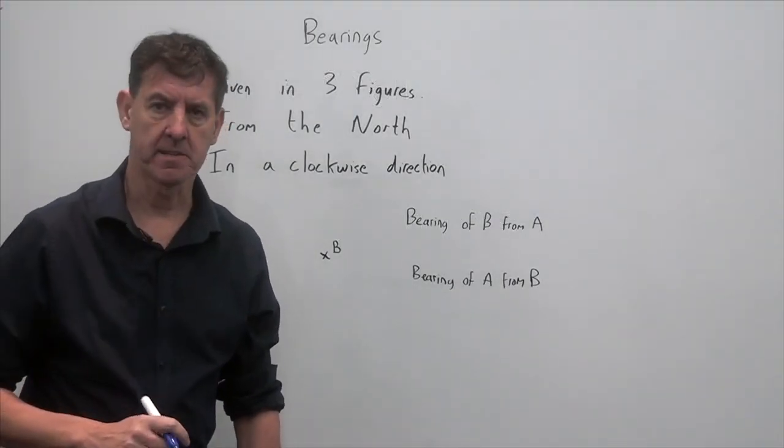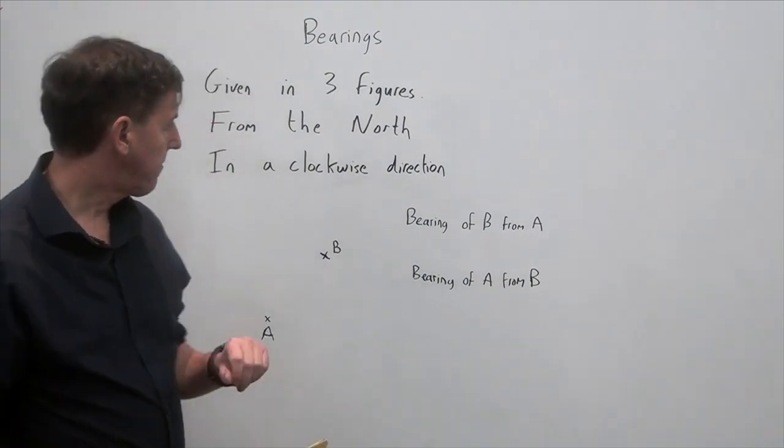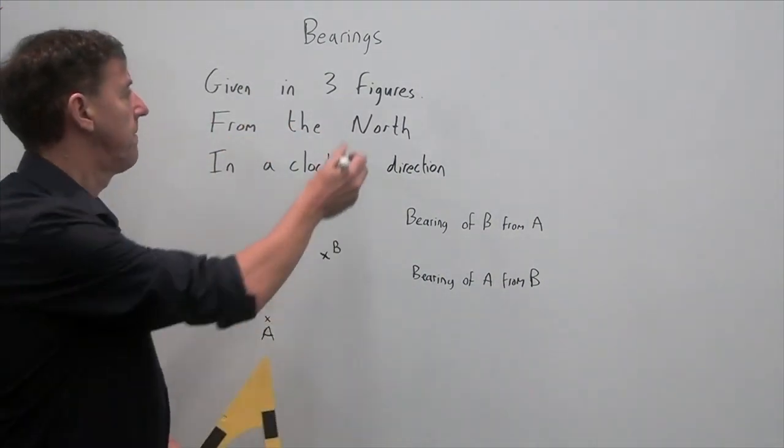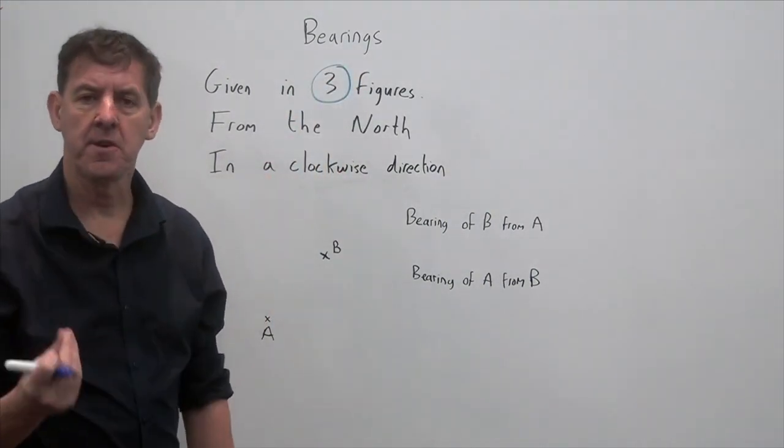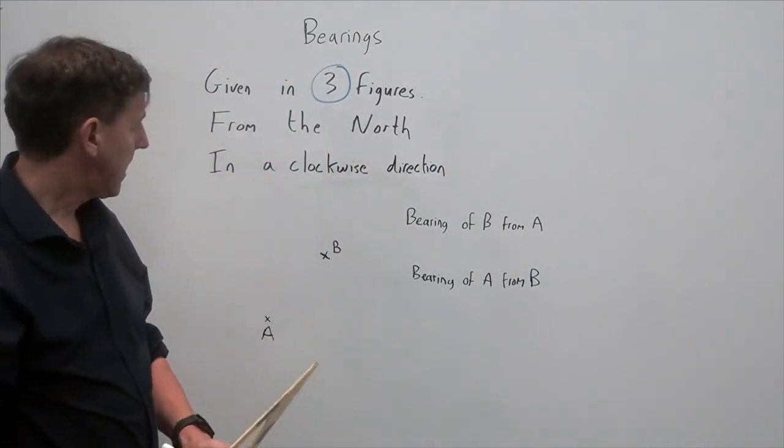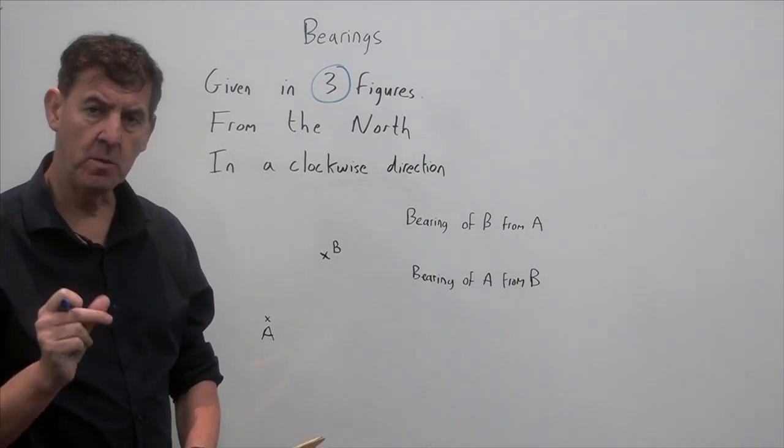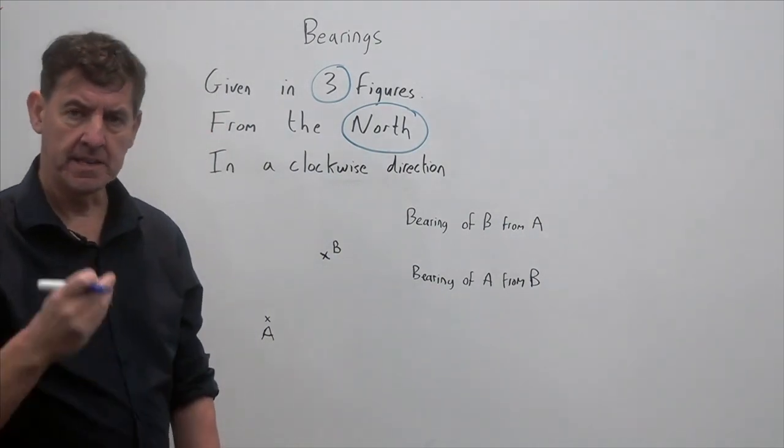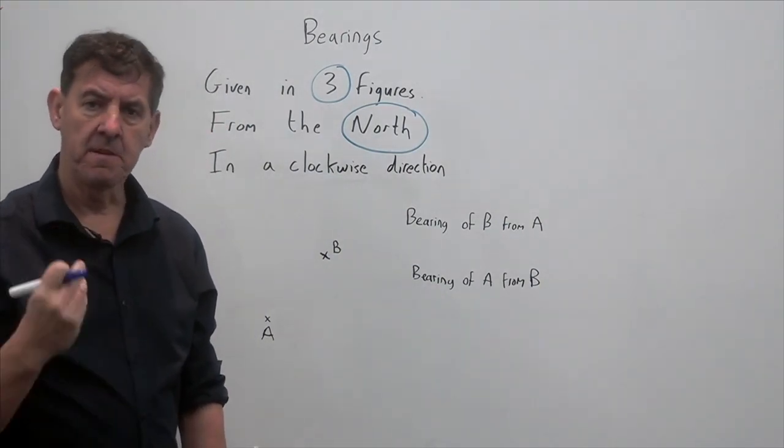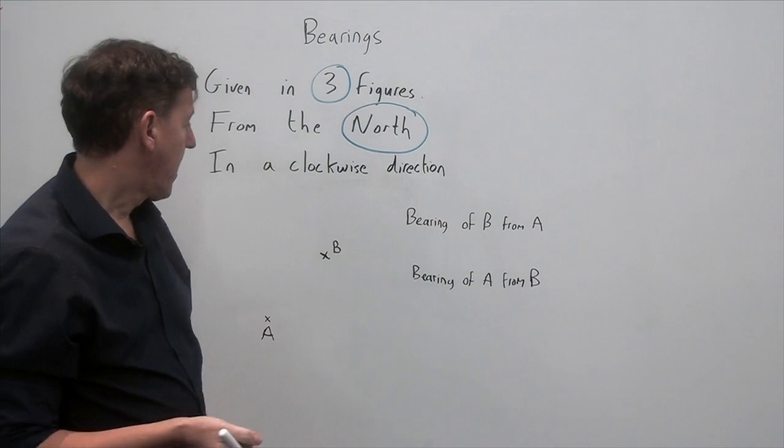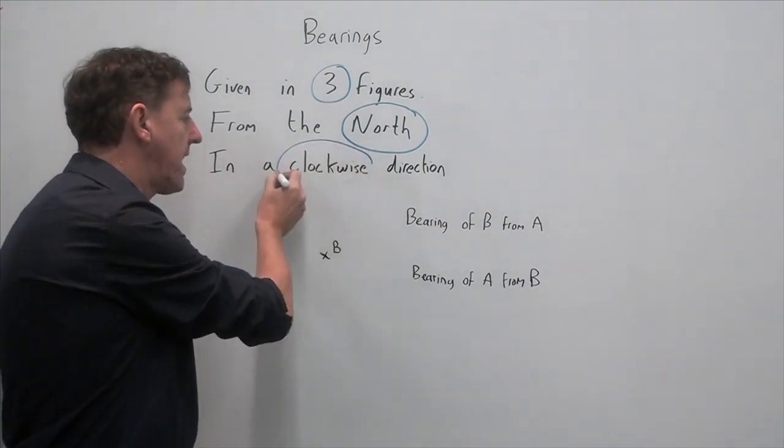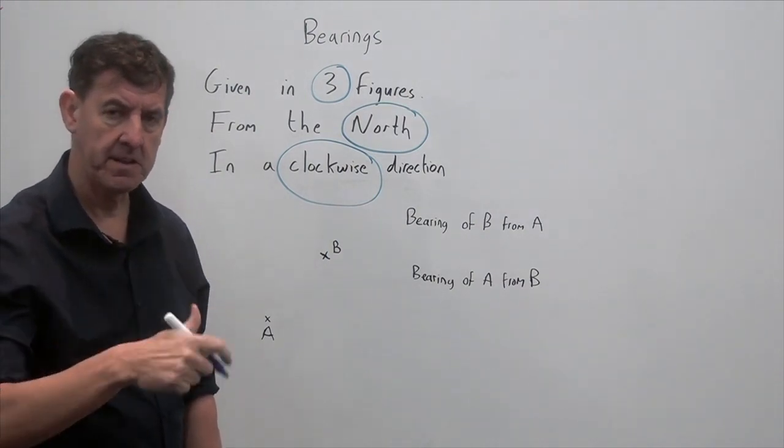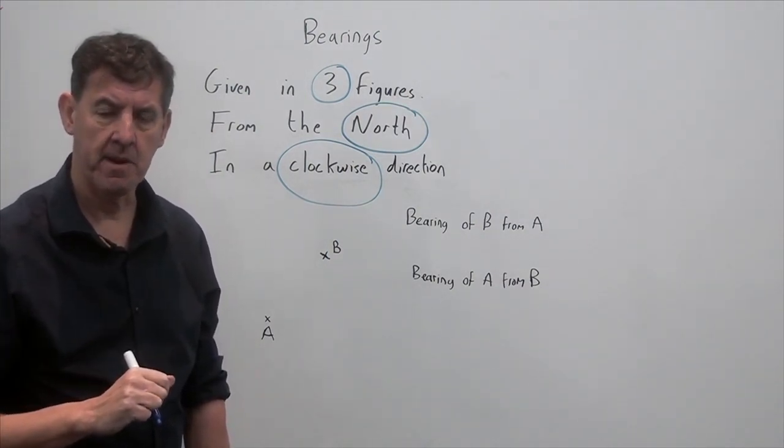Okay, this lesson is on bearings. Now the key thing about bearings is we've got three major things to remember. First and foremost, all bearings are given in terms of three figures. Secondly, the bearing is always given from the north. So the first thing you must always do is to put a north line in before you read your bearing. And finally, don't forget it must be in a clockwise direction. So the key things: three figures from the north in a clockwise direction.